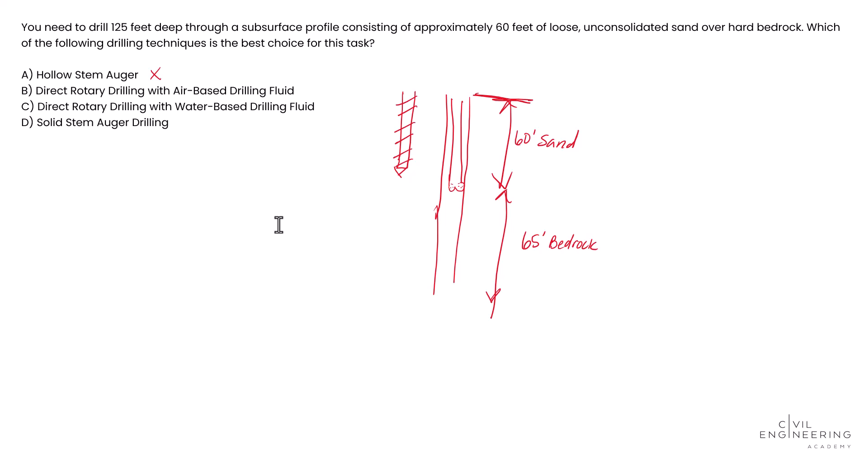Now a solid stem auger is going to be similar. It's really for shallow depths in soft or kind of moderately hard formations. It's really not appropriate for the depth that we're going. And this transition from sand into bedrock, that's not going to be the best use for that. So we're going to put X's on those.